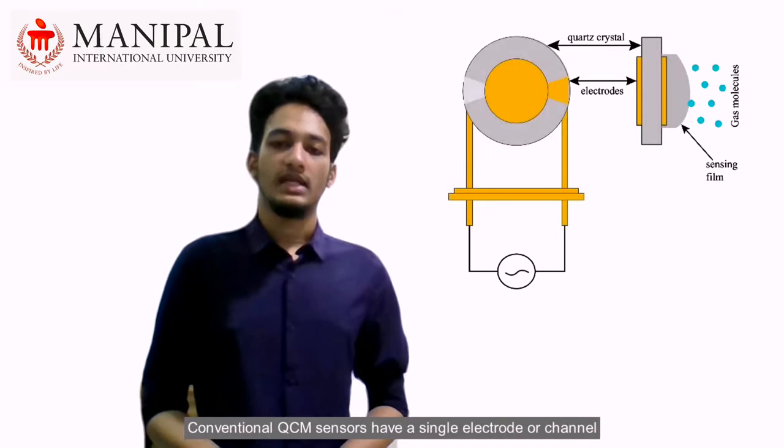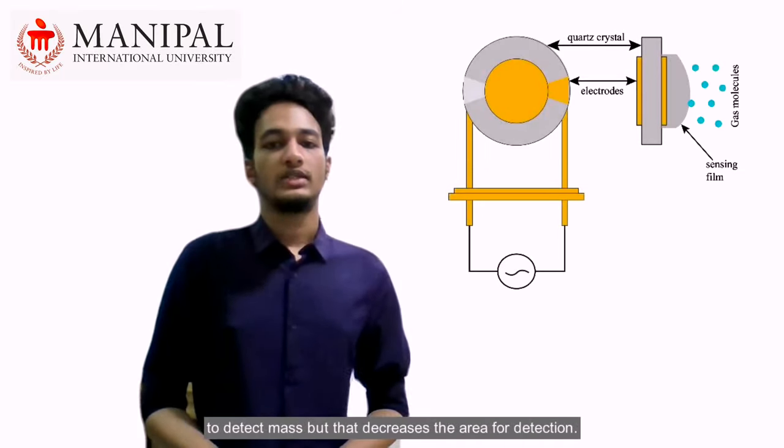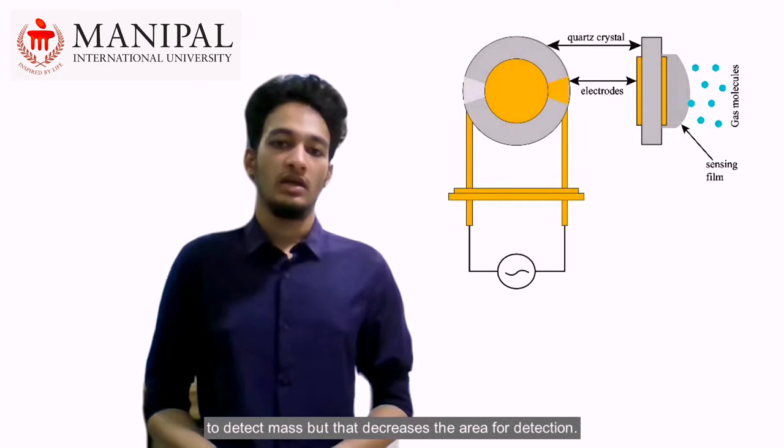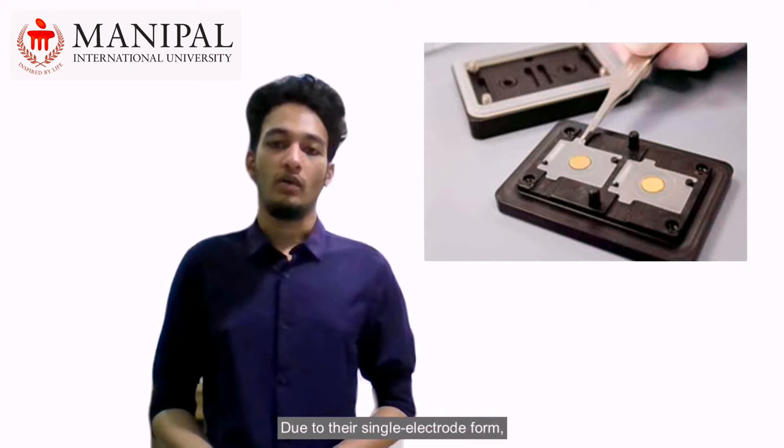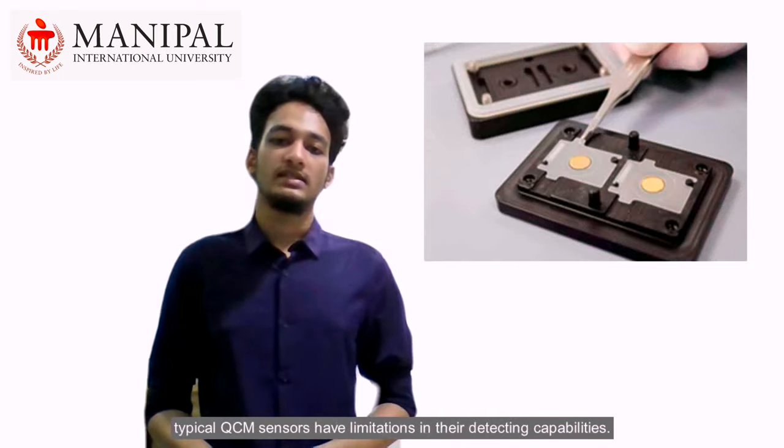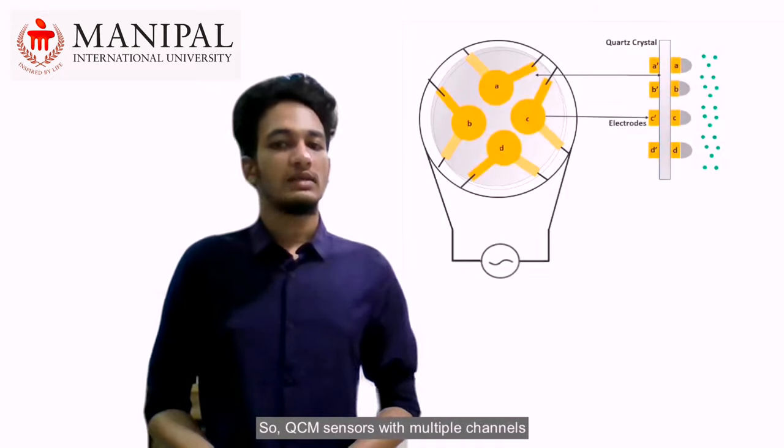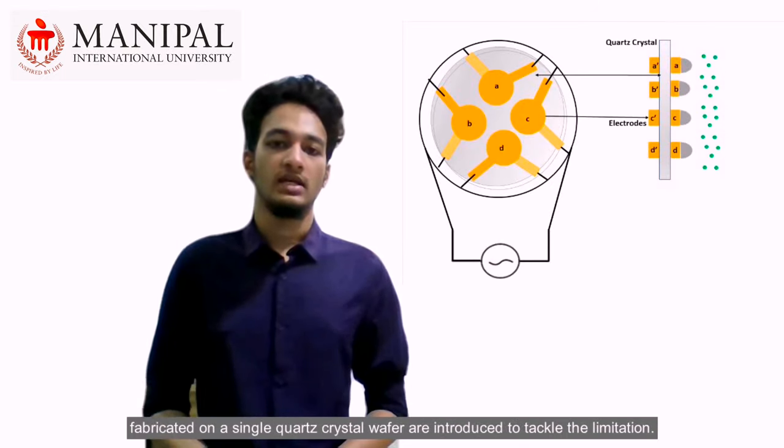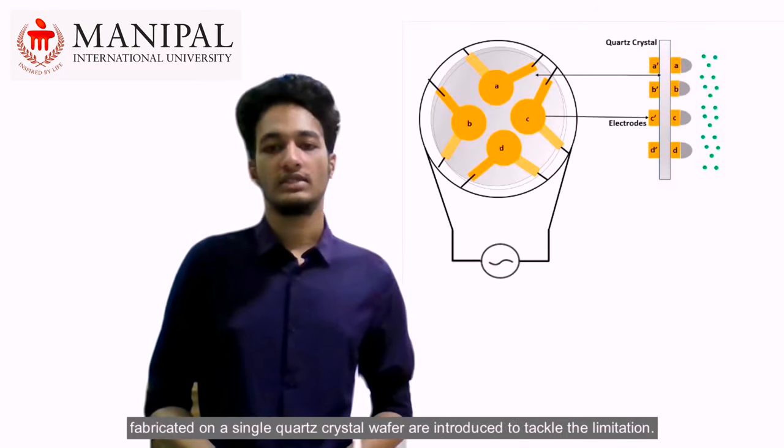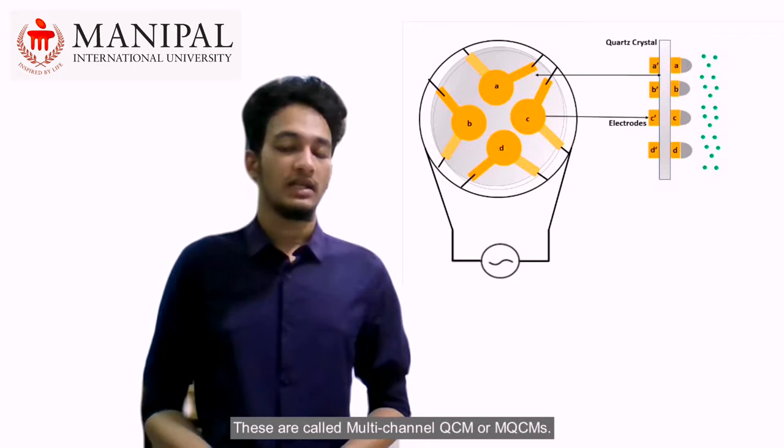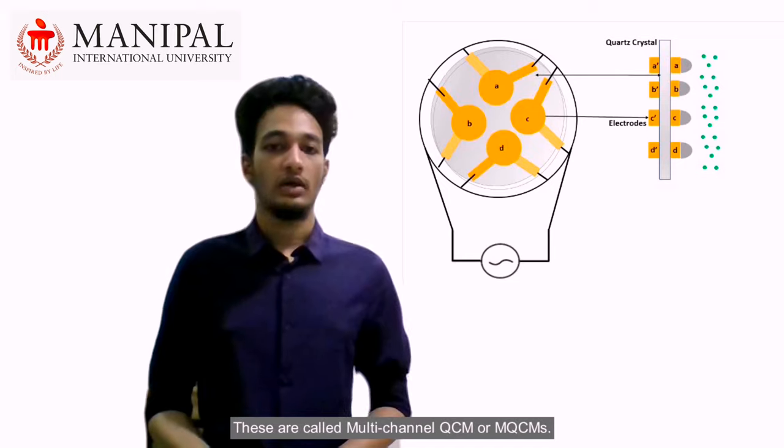Conventional QCM sensors have a single electrode or channel to detect mass, but this decreases the area of detection. Due to their single electrode form, typical QCM sensors have limitations in their detecting capabilities. So QCM sensors with multiple channels fabricated on a single quartz crystal wafer are introduced to tackle the limitation. These are called multi-channel QCM or MQCMs.